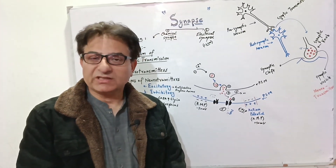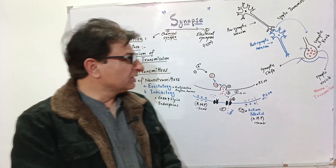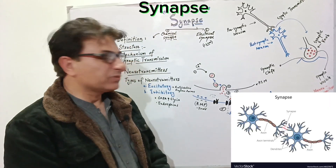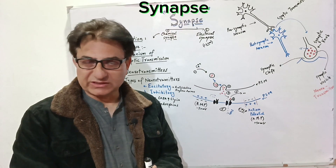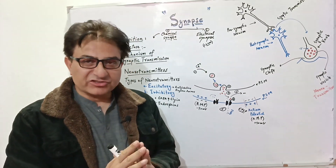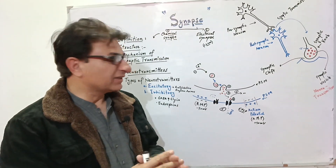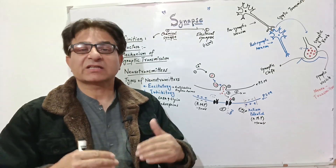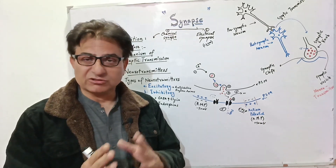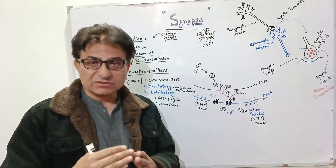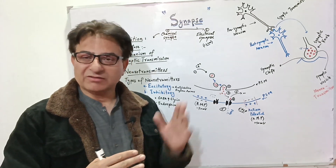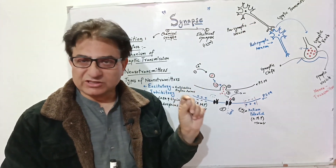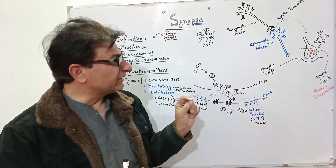Assalamu alaikum. We will discuss about synapse, which is a junction between two consecutive neurons. Neurons are the structural and functional unit of the nervous system. They are capable of generating nerve impulses and transmitting this information from one part of the neuron to the next, traveling along the length of the neuron.